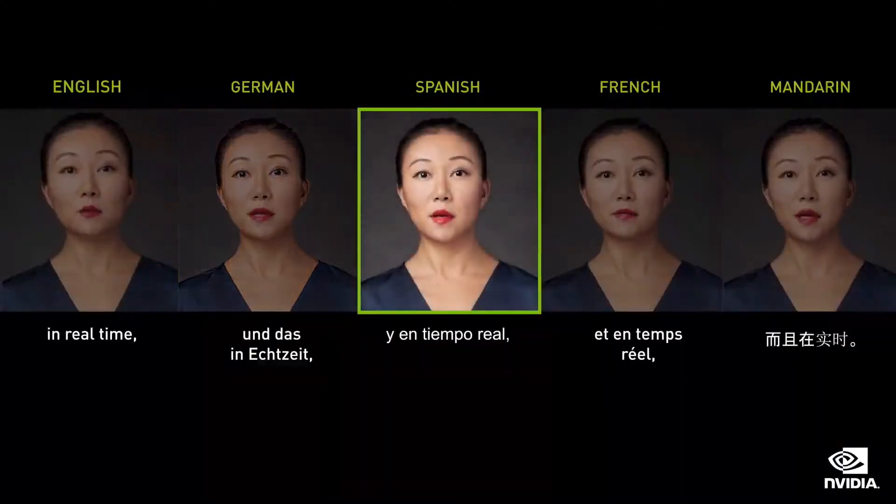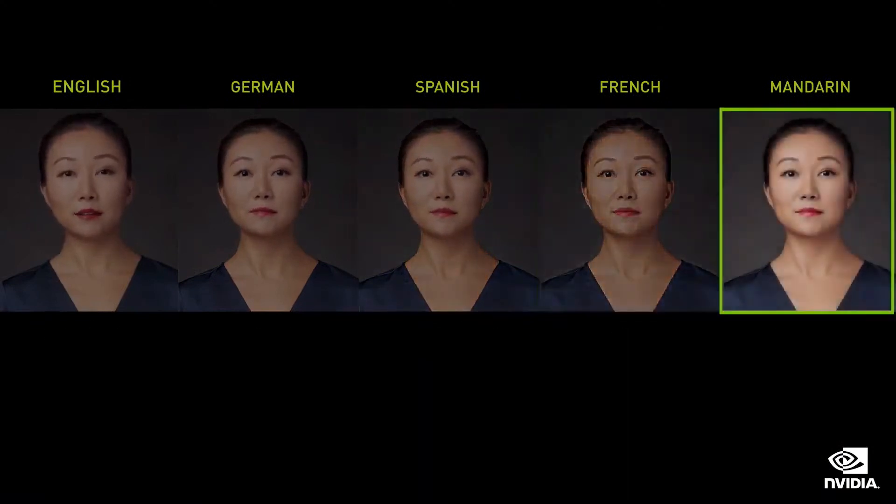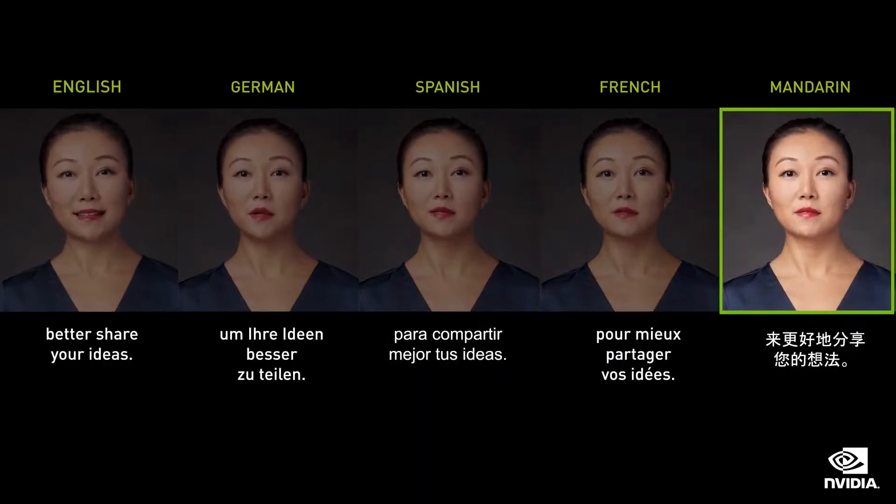Depending on which version of Alex's avatar you choose, she will speak to you in that language. Eye contact is critical to engaging your audience. Maxine keeps my eyes on you even when they are looking down at the script. Maxine uses computer vision to track Alex's face and recognize her expressions.